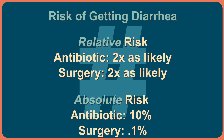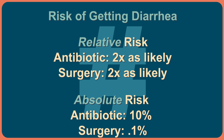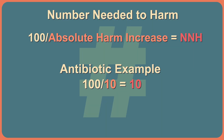The drug increased your risk by 10%; surgery increased it by 0.1%. Just like we calculated numbers needed to treat, we can calculate numbers needed to harm. We can calculate the NNH by taking 100 and dividing it by the absolute harm increase. Let's start with the drug — it had an absolute risk increase of 10%. Therefore, the NNH is 100 divided by 10, or 10.